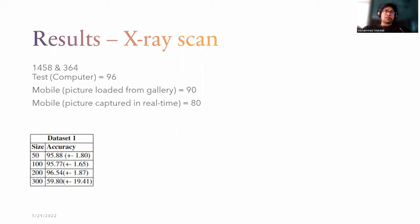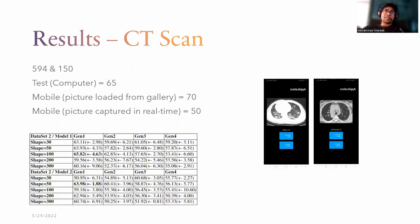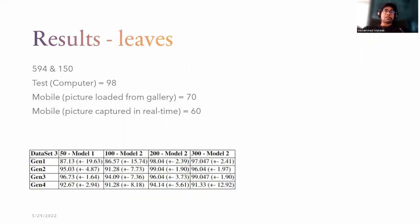The first dataset consisted of about 1,458 negative cases and 364 positive cases. The performance of the model was 96% when the image size was 200. When pictures were loaded from the mobile gallery, it was 90%, and when pictures were captured in real-time, it was 80%. For the CT scan dataset, performance on the computer was 65%, on mobile phone it was 70%, and when pictures were captured in real-time it was 50%. We set aside five pictures from each category when testing the model on mobile phone. For leaves, classification accuracy on the computer was 98%, from gallery it was 70%, and in real-time it was 60%.